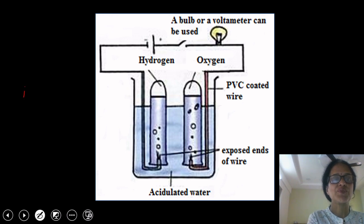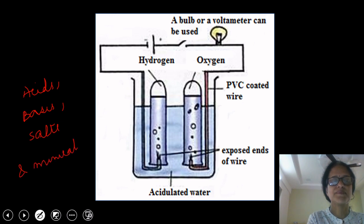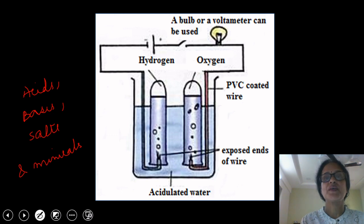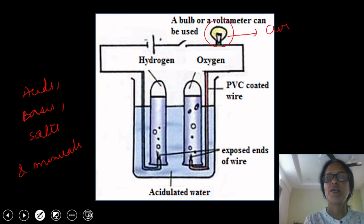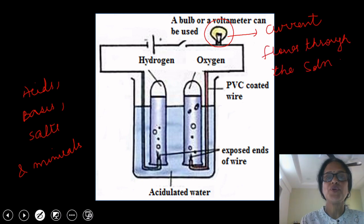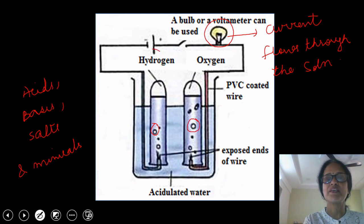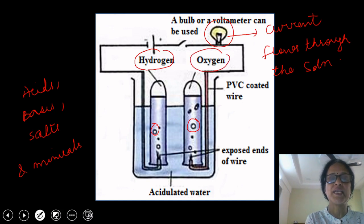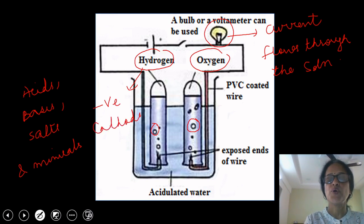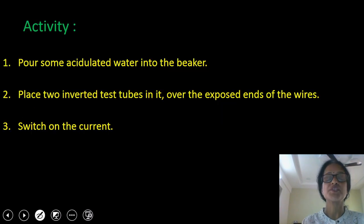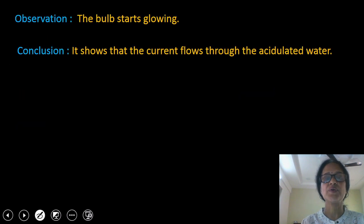The presence of impurities makes water a good conductor. Impurities can be added in the form of acids, bases, salts, and minerals. So when electric current is passed through acidulated water and the switch is turned on, we can see the bulb starts glowing. Glowing of the bulb indicates that current flows through the solution. Apart from glowing of the bulb, we can see bubbles of gases above the bare ends of copper wire — these bubbles are of hydrogen gas and oxygen gas. Hydrogen gas is liberated at the negative electrode, the cathode, and oxygen gas is liberated at the positive electrode, the anode. The detailed description of this activity is given in the slides.